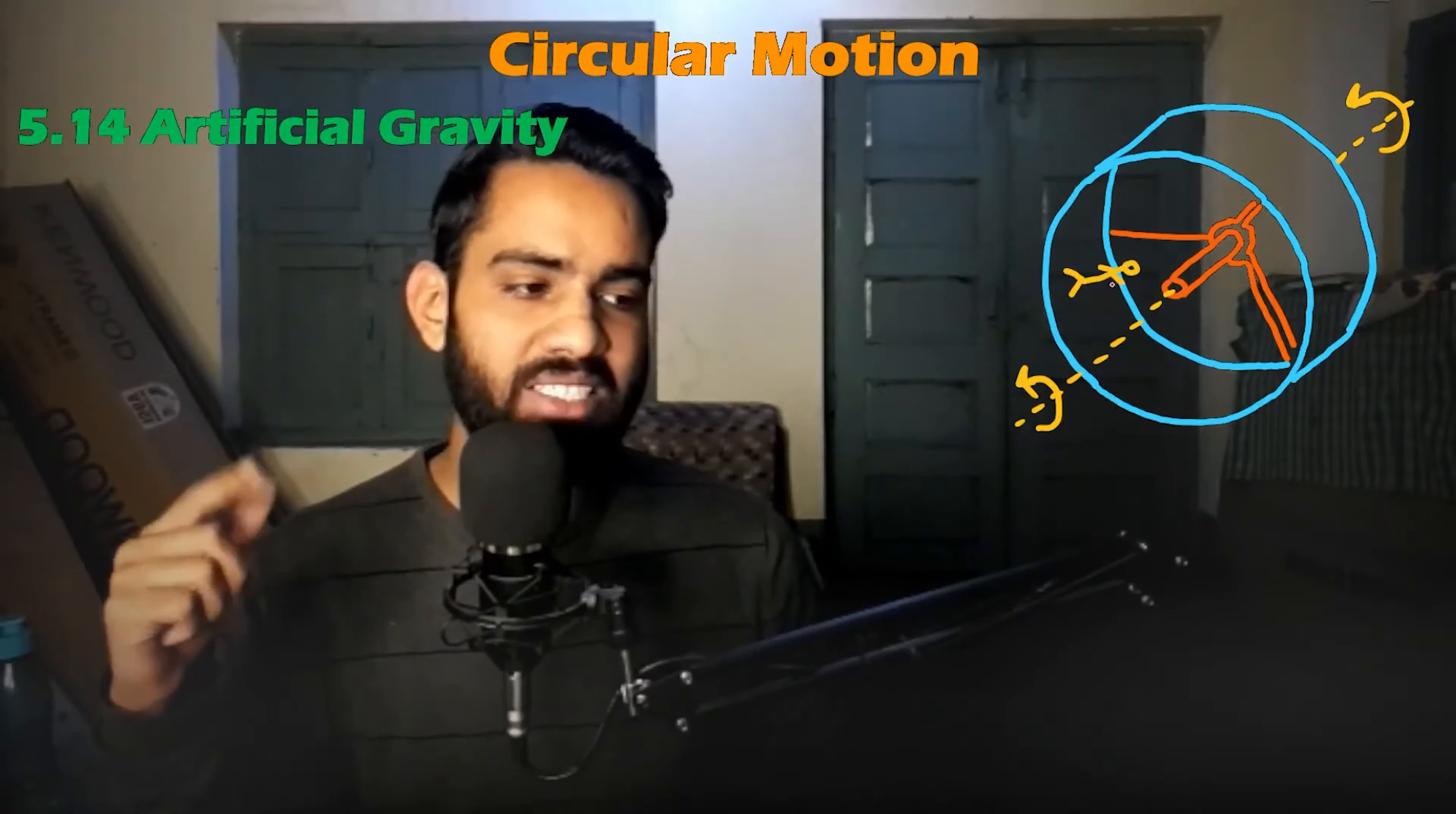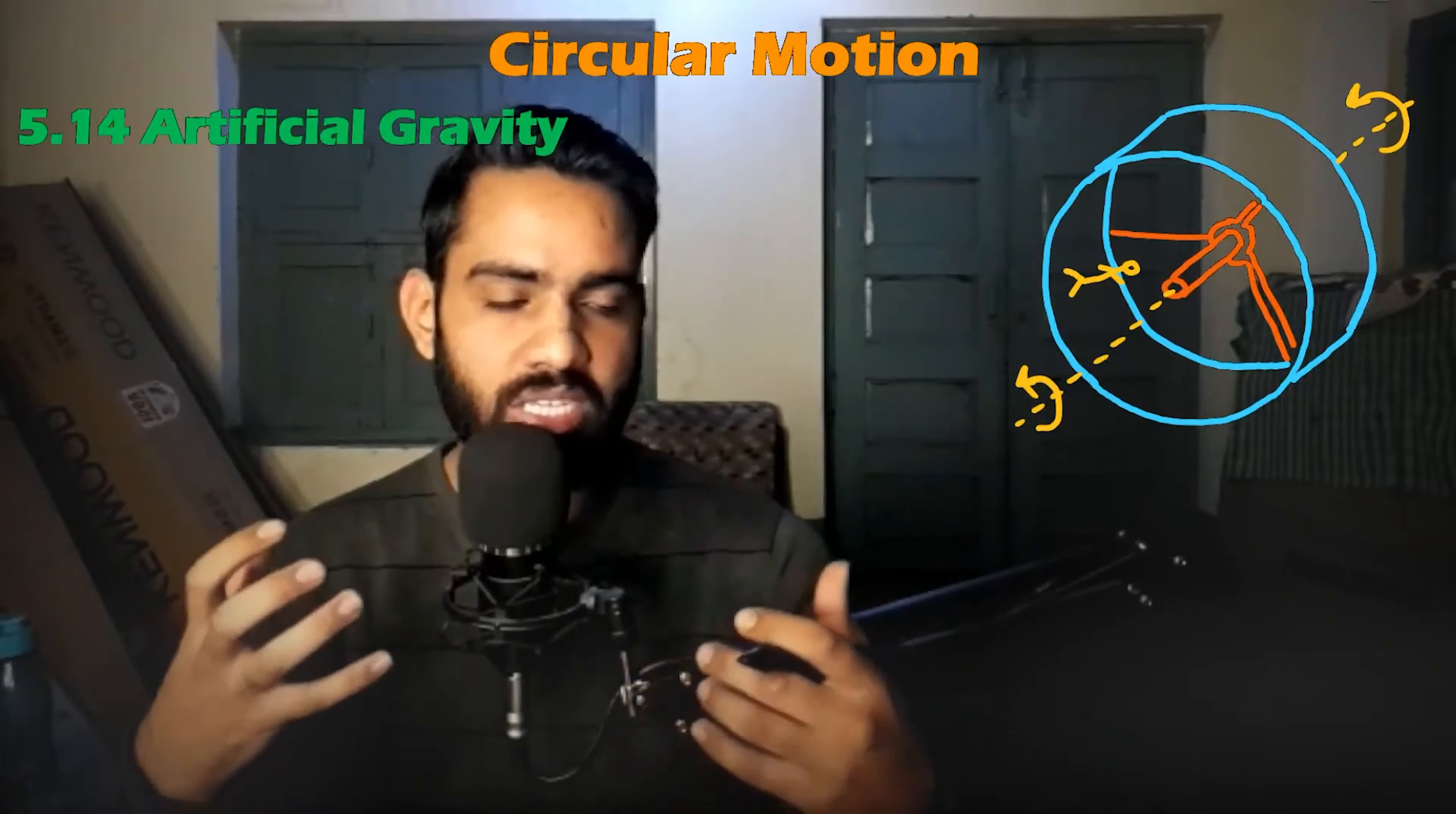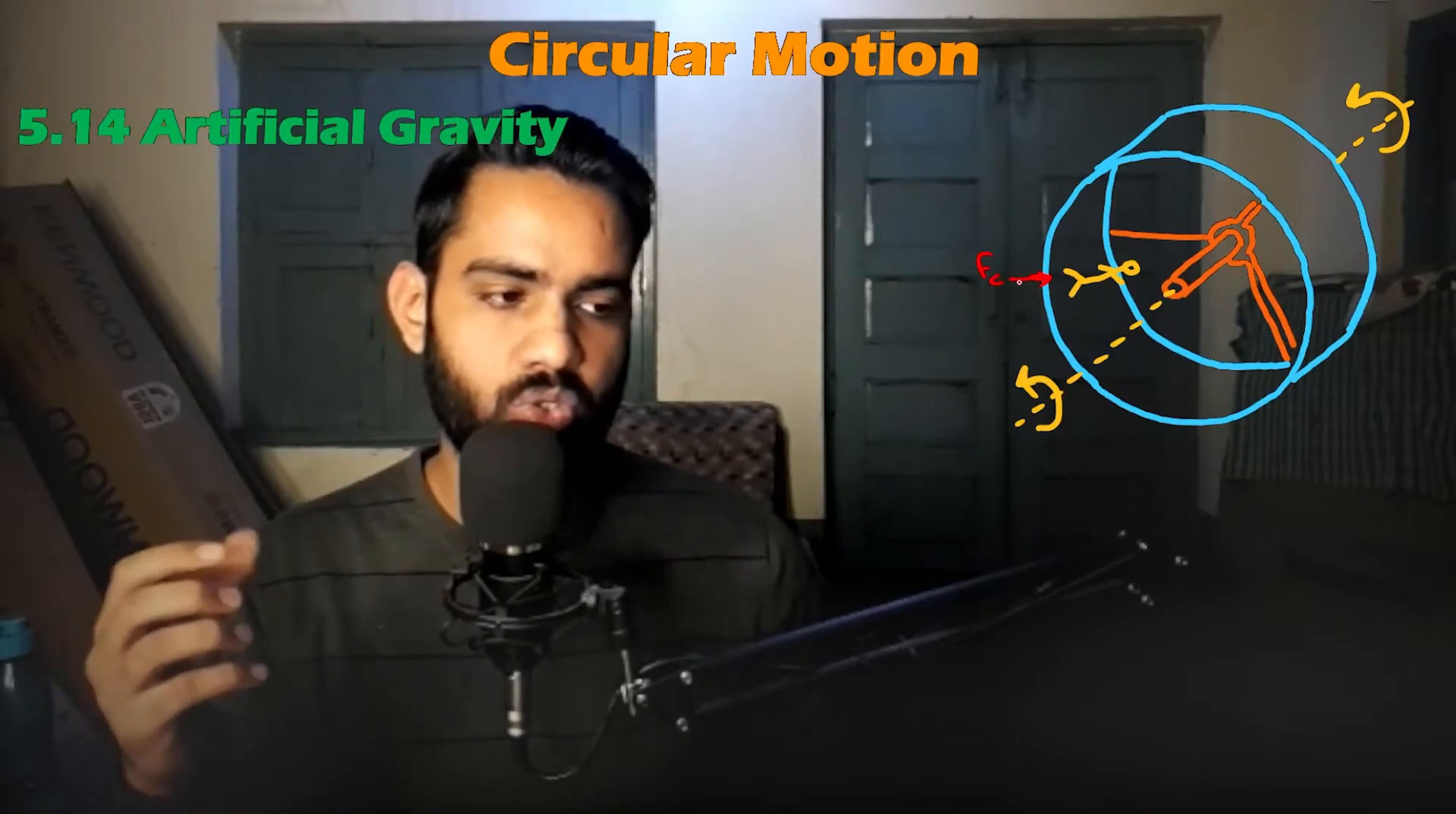As you know, rotation has centripetal force. If we have circular motion, we will find the centripetal force, and the reaction which is called centrifugal force. For example, if we have this ship rotate, the ground will exert a force to the surface, and this will be our centripetal force.